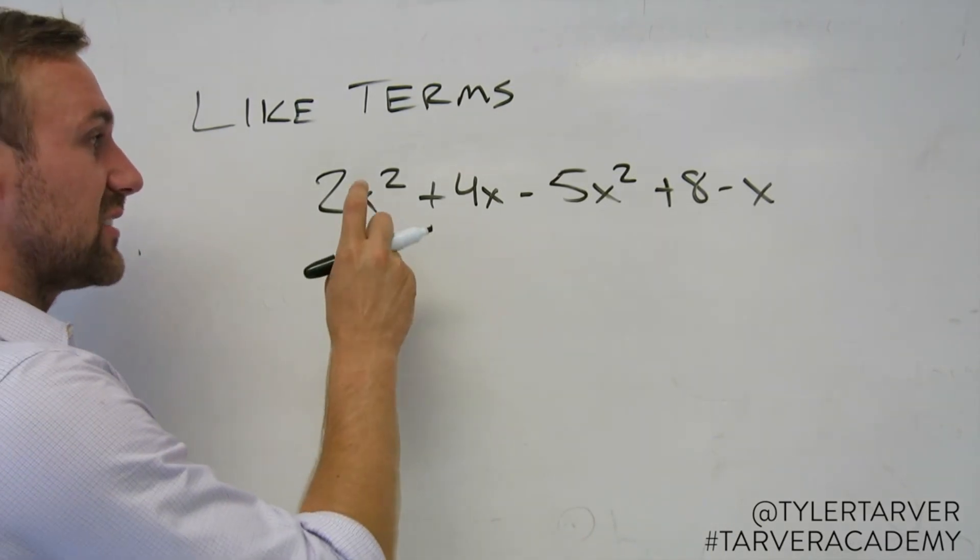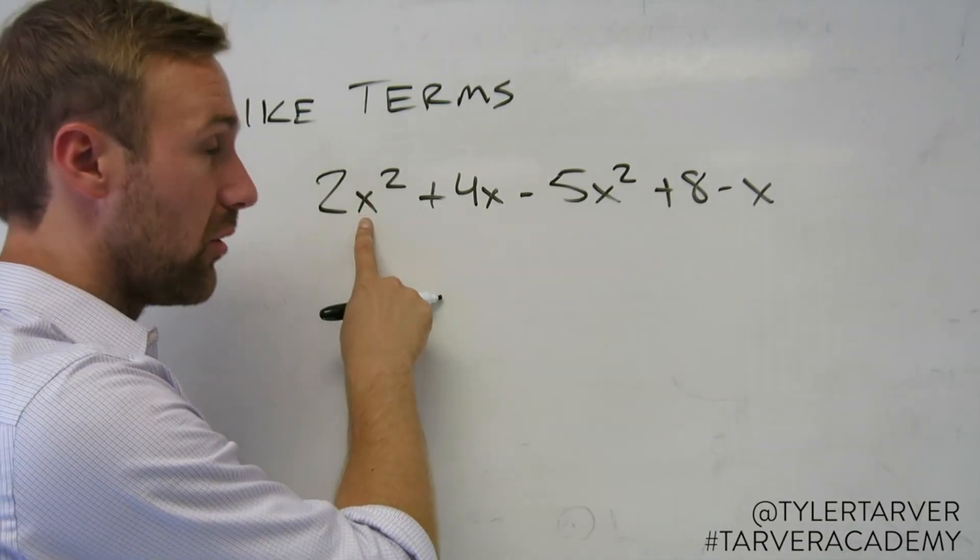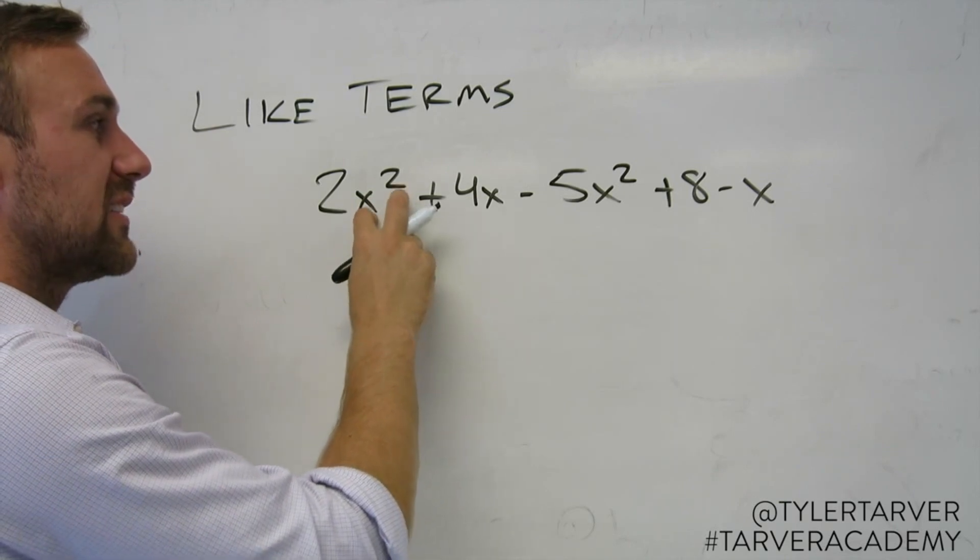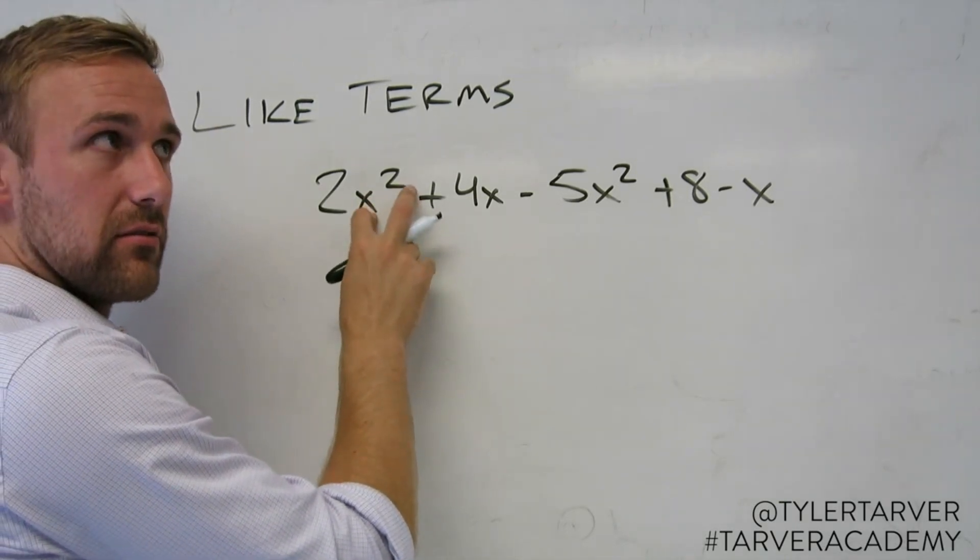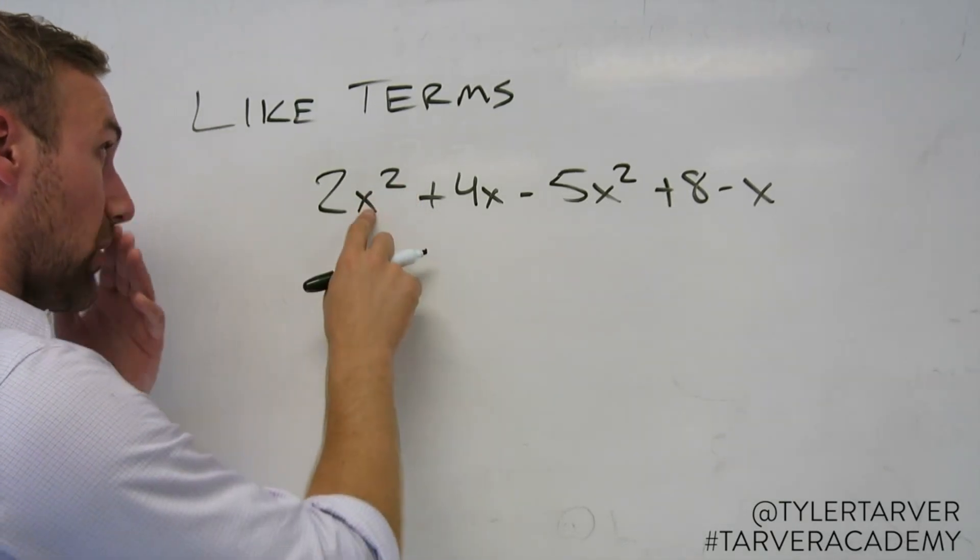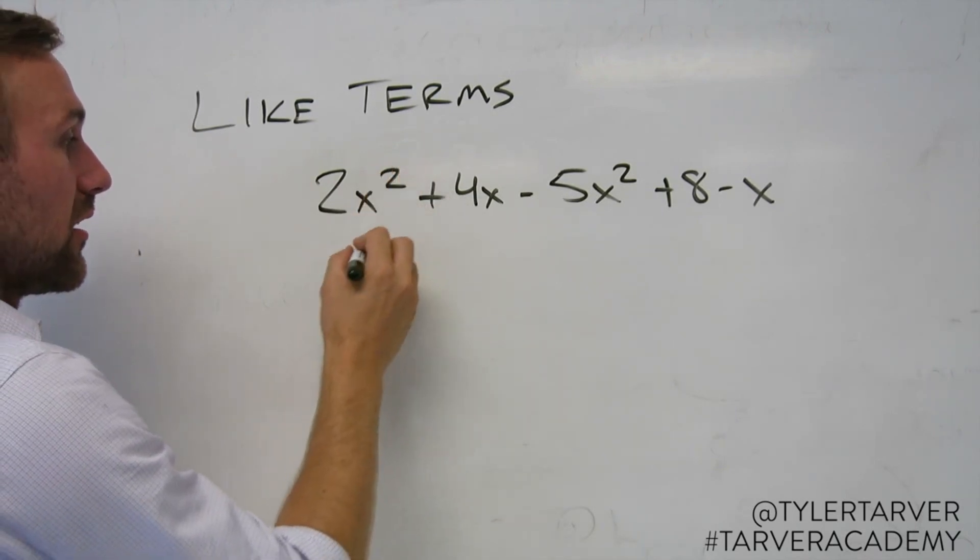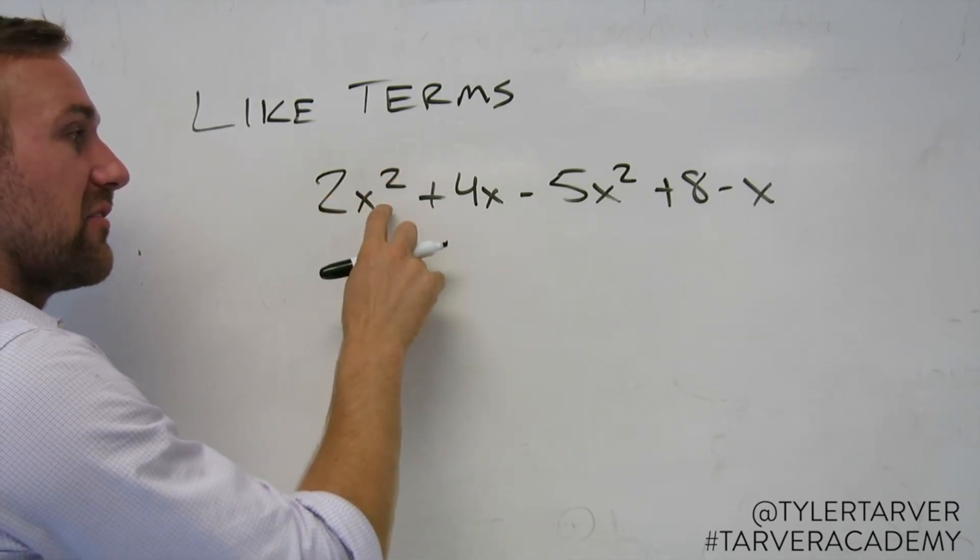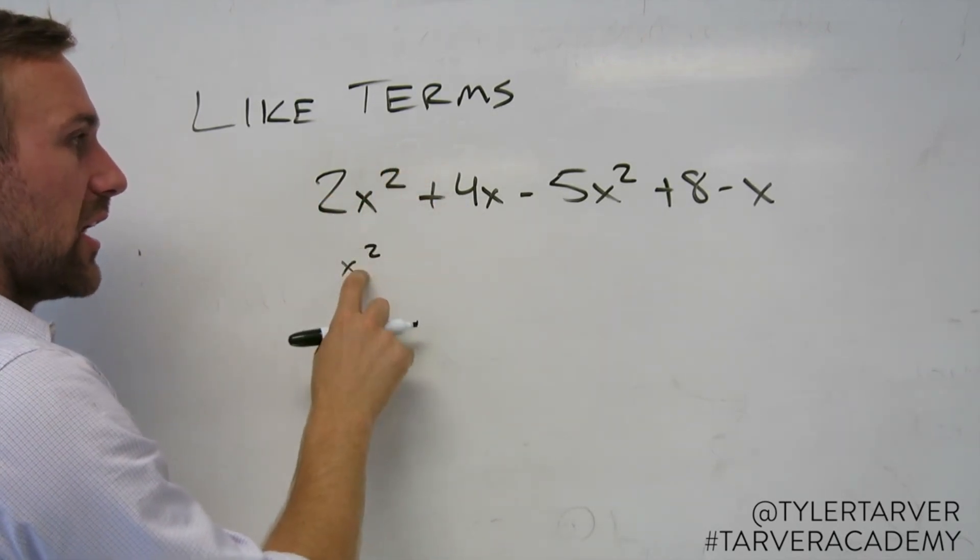Like terms means that they have the same variable and that variable has the same exponent. So right here, this is x squared. I don't care about the number. I care about the variable and its exponent. x squared.